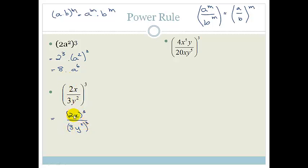And now we're going to handle both the numerator and the denominator exactly like we did here. This becomes 2 cubed times x cubed, all over 3 cubed times y squared cubed.